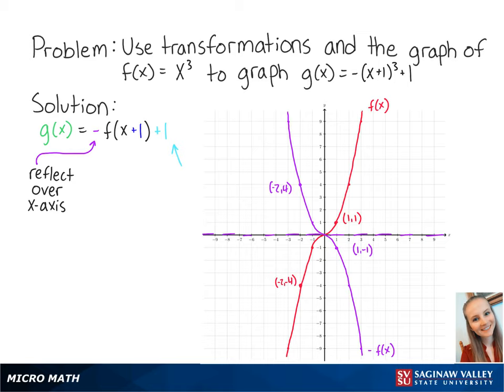Adding 1 to the function means that we will shift our new graph up by 1 unit. So our new points are at -2, 5, and 1, 0. Connecting the points, we get the graph of -f(x)+1.